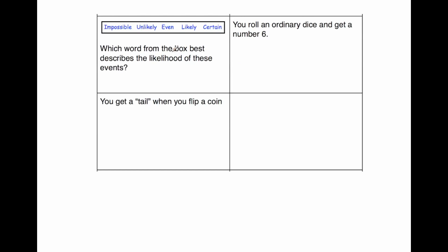Our next question is a probability question, and here we've got a selection of words. We've got impossible, unlikely, even, likely, and certain. And the question says, which word from the box best describes the likelihood of these events? So here we've got our first question.